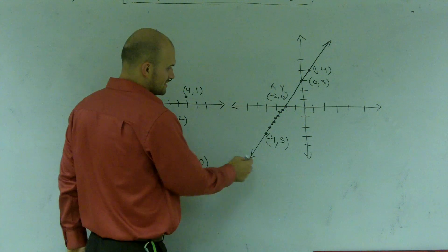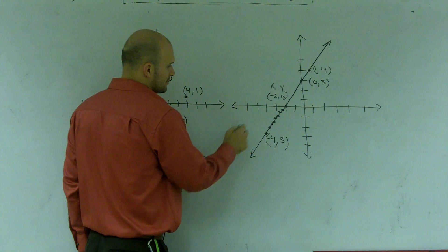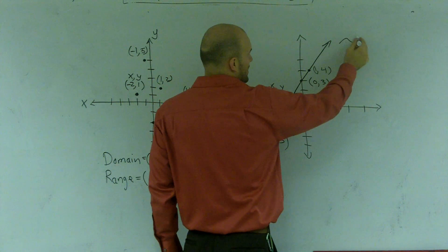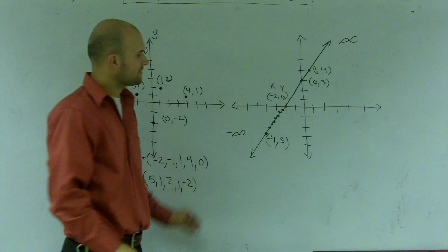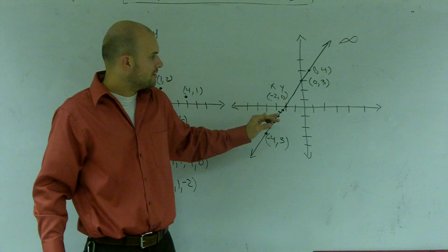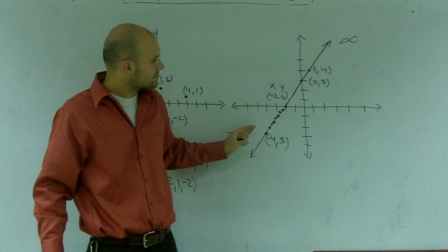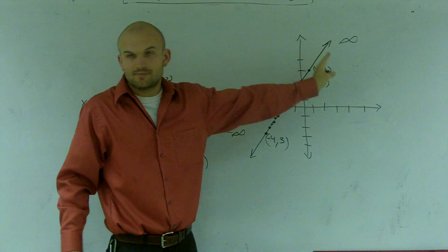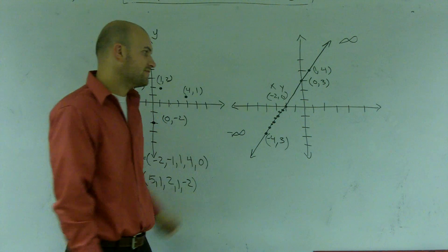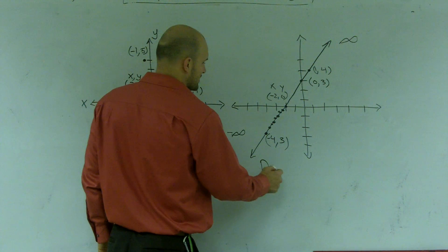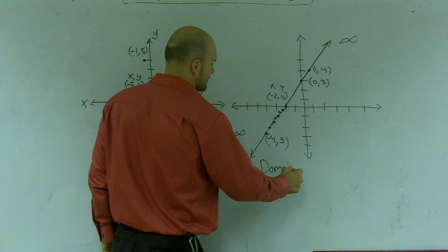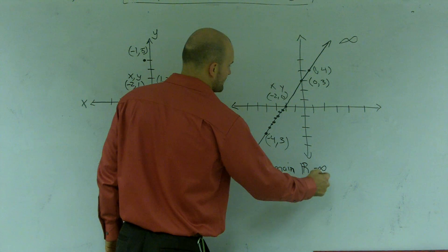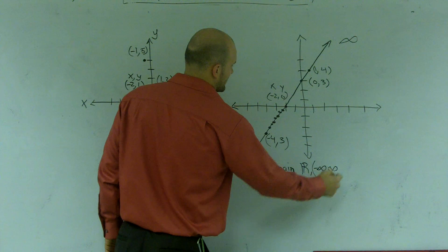So what I can say is x values is going to cover all of the points. And how far does it go? Well, as I keep on going over there, it's going to keep on going to negative infinity. And if I keep on going over to the right, it's going to go to positive infinity. So since there's no break in the graph, what I have is my domain is going to be all numbers. All numbers to negative infinity. So what I can do is I can write my domain is all real numbers or from negative infinity to infinity.